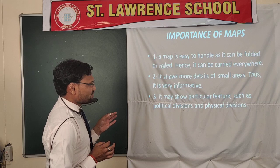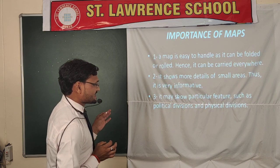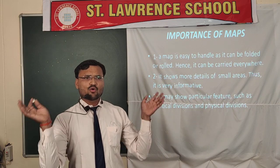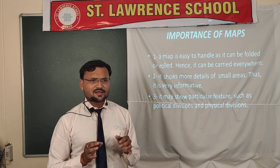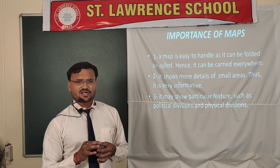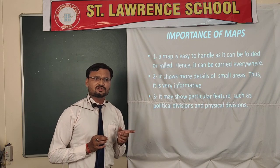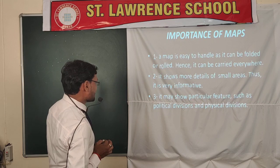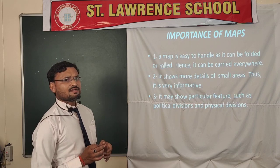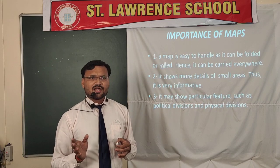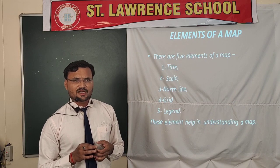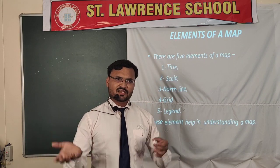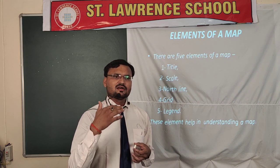The third point is that a map shows particular features such as political divisions and physical divisions. On the globe, we represent the whole Earth all together, but in maps we can focus on a particular feature. For example, we can prepare a physical map showing only physical features of a region, or prepare a political map showing political divisions and international boundaries of countries.